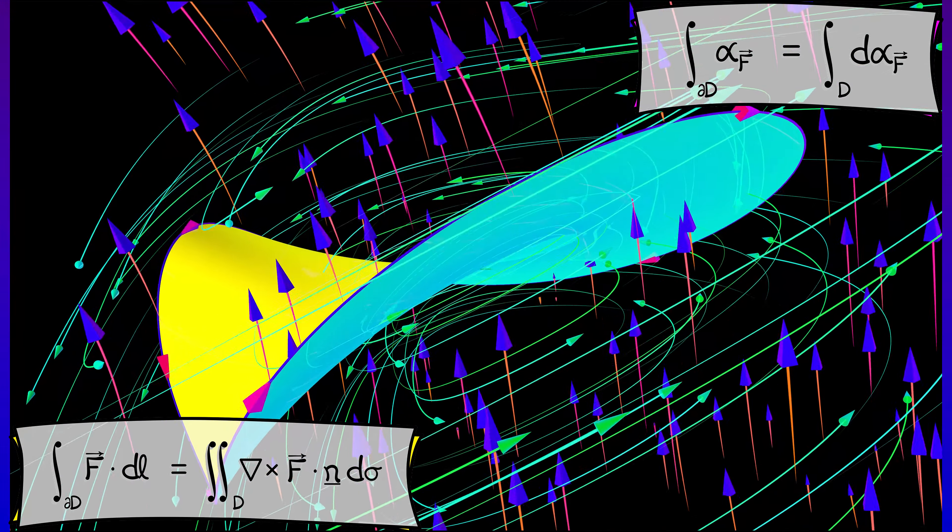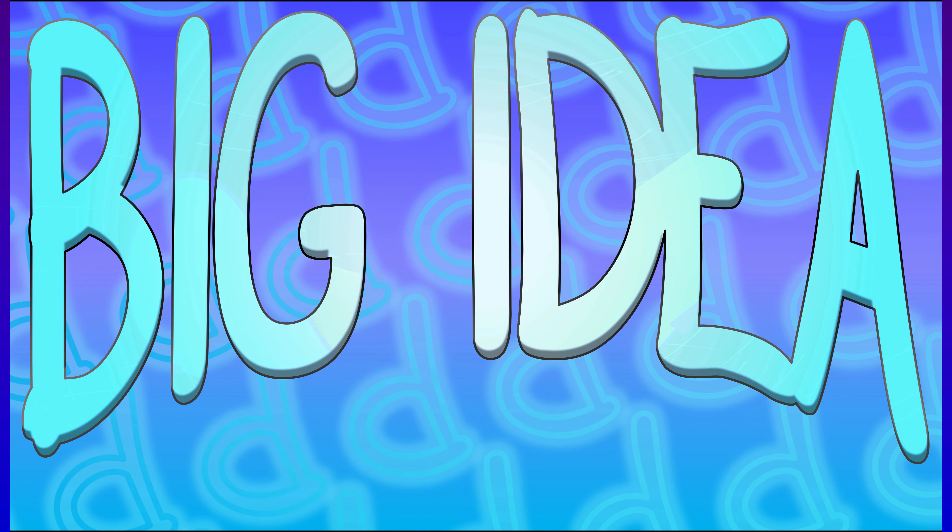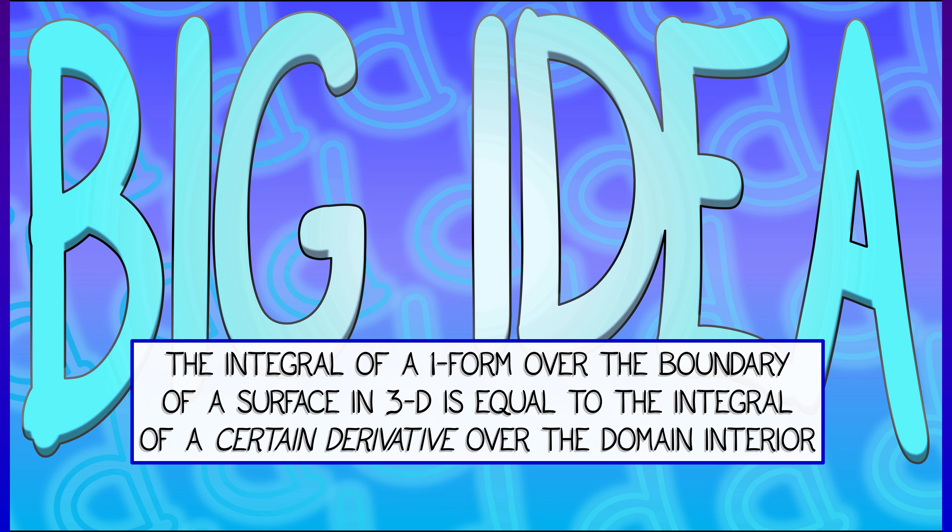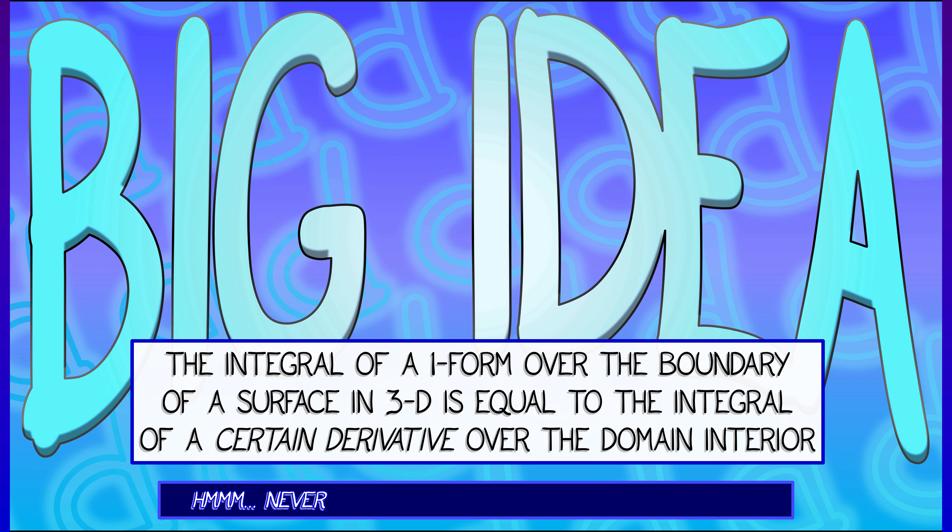the integral of a one form along a curve in 3D is equal to the integral of its derivative, thought of as a two form, over a two-dimensional domain that bounds that curve. And that should seem somewhat familiar to you. That's something that we'll return to again and again.